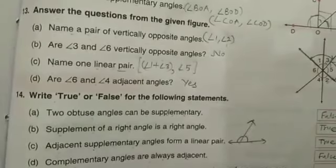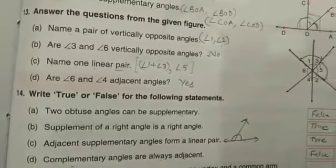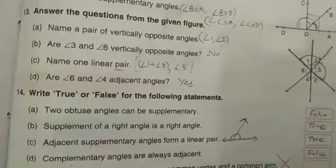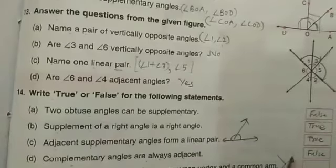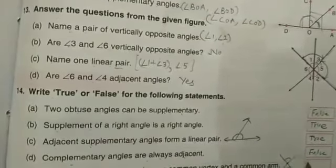Next, vertically opposite angles have a common vertex and a common arm. See, these two are vertically opposite angles. They have a common vertex but their arms are not common. So the result is again false.